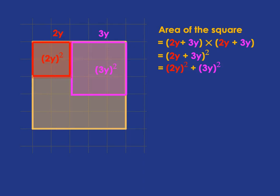And you can see, if you take 2y squared and 3y squared, the red square and the pink square, and you put them together, you certainly don't get the full area of the yellow square. And so, the answer to our question is, absolutely not.